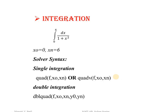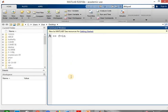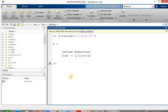Now let's move to the next topic: evaluating the integral. The integration equation is given along with the initial limit and final limit. The initial limit will be denoted by x0 and the final limit by xn. The solver syntax for single integration is quad f comma x0 comma xn, or we may use quadv in bracket f comma x0 comma xn. Generally the quadv syntax is most applicable. Let's see how to write this in MATLAB. Define the function first using inline syntax: write f equal to inline in bracket inverted quote. The given equation is 1 divided by 1 plus x squared, written as 1 divided by in bracket 1 plus x caret 2. Hit the enter key — the function is assigned to variable f. Then use the solver syntax.